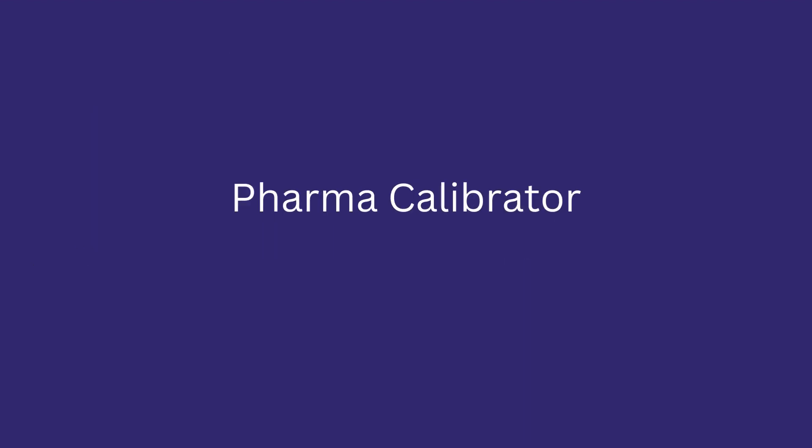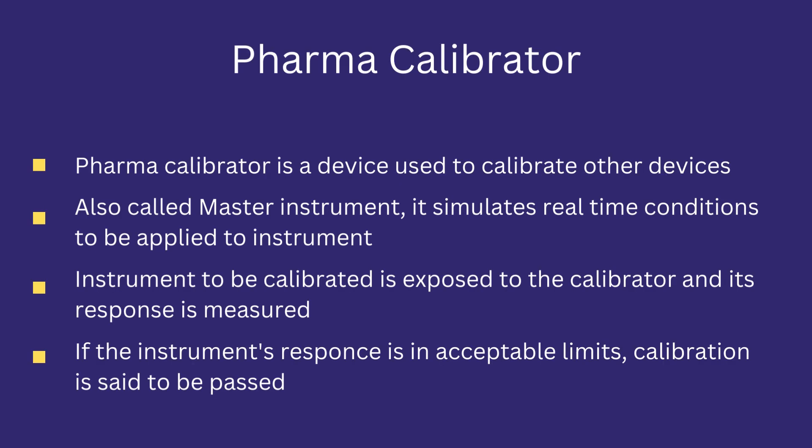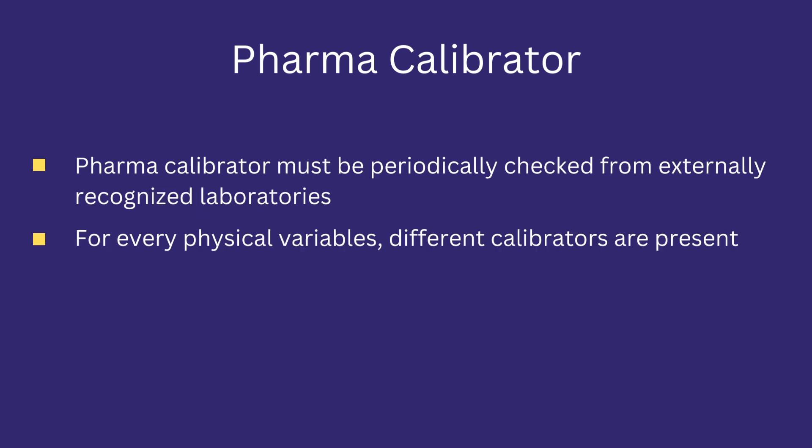Finally, a pharma calibrator is a device used to calibrate other devices. Also called a master instrument, it simulates real-time conditions to be applied to an instrument. A pharma calibrator must be periodically checked by externally recognized laboratories. For every physical variable, different calibrators are used.